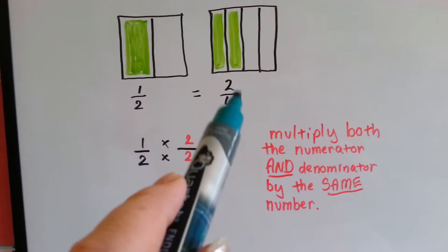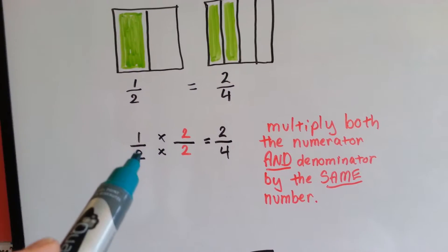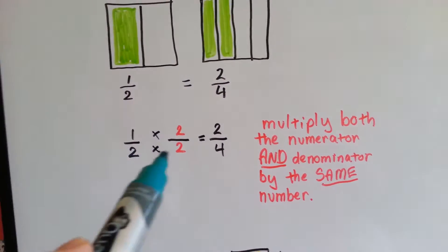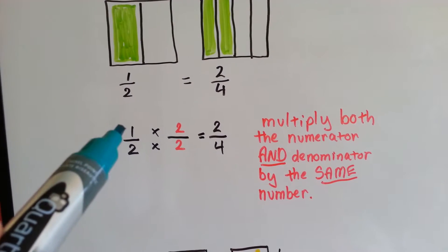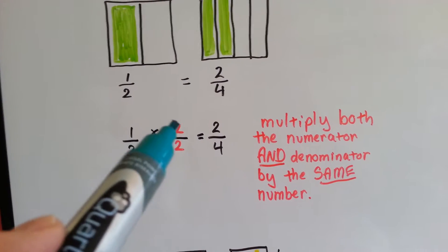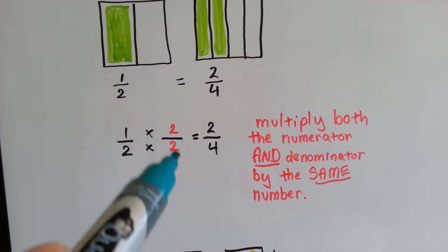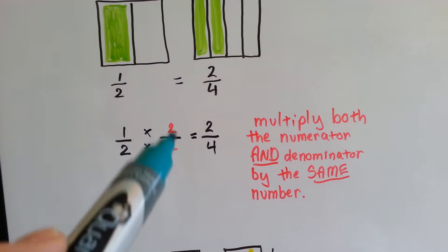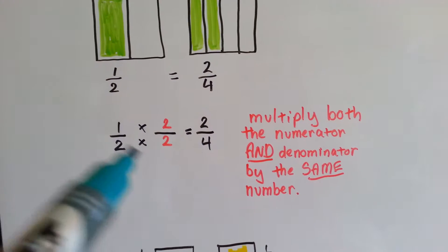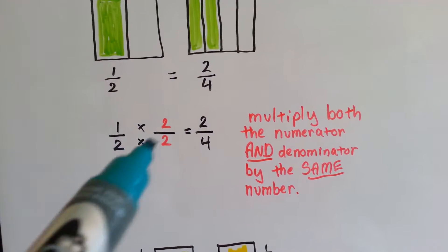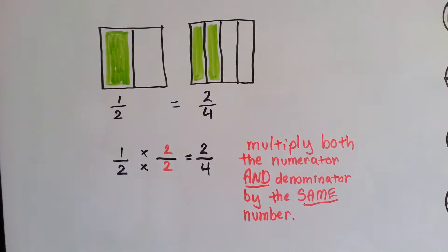To get the two-fourths mathematically, all we have to do is multiply the numerator and the denominator by the same number. If we multiply the numerator by two and the denominator by two — the same number on both — we'll get an equivalent fraction. One times two is two, two times two is four. One-half is equal to two-fourths.